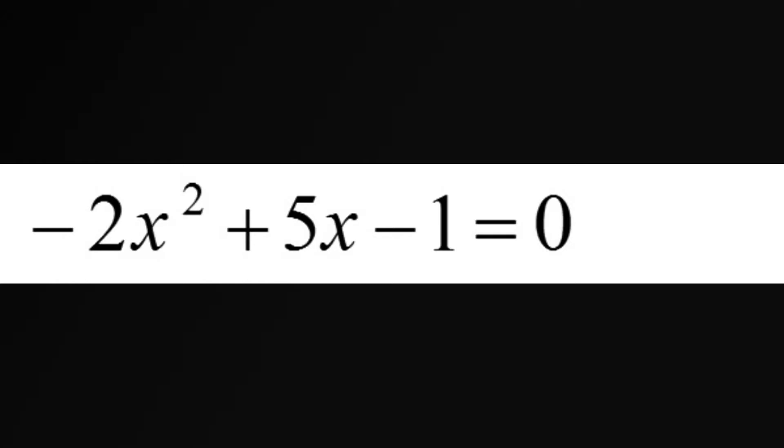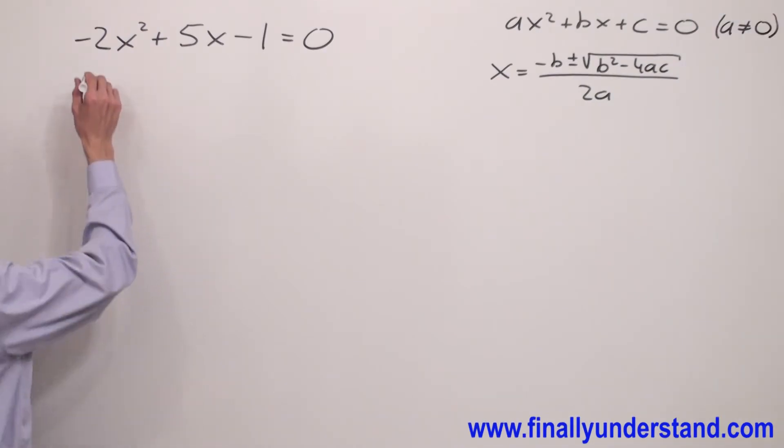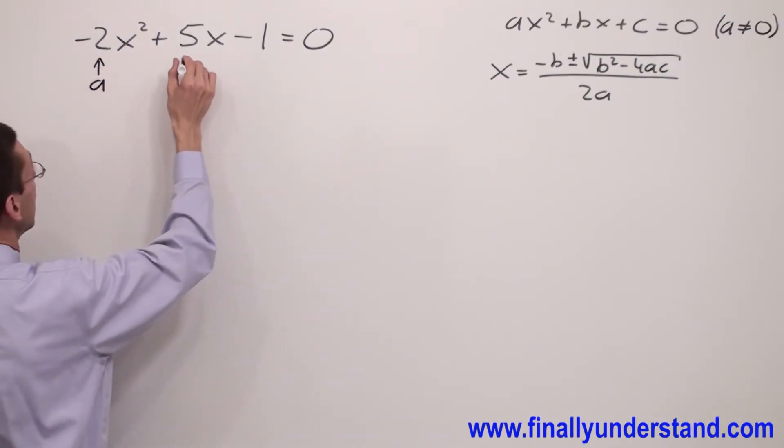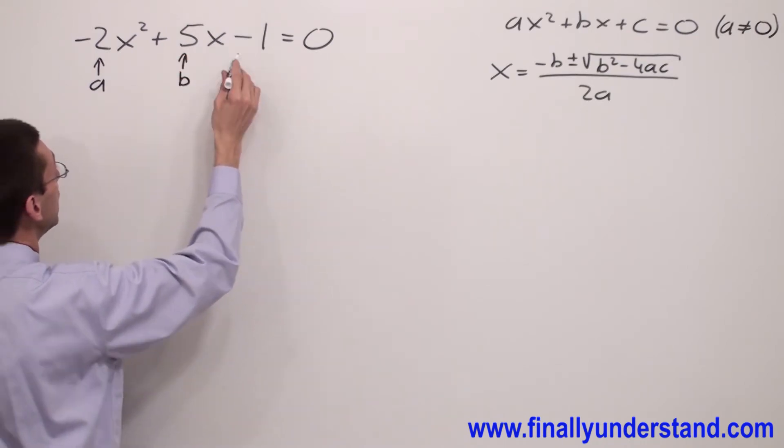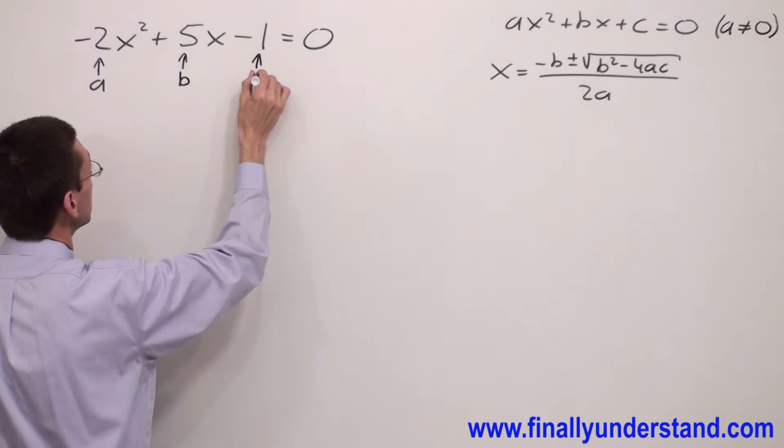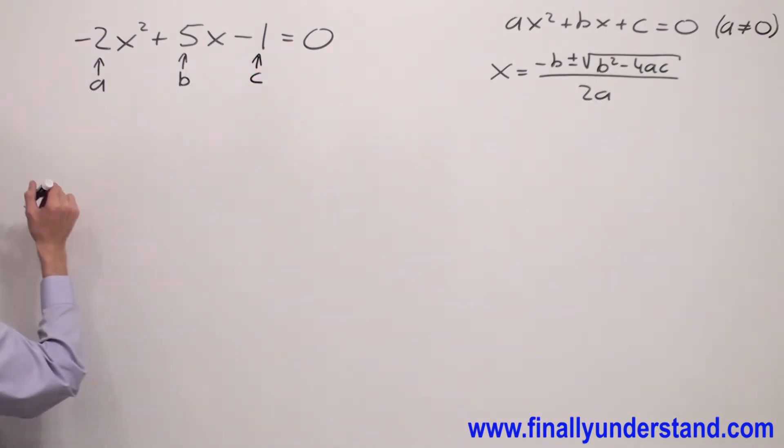We have another quadratic equation on the board. First we're supposed to find a, b, c. Okay, so negative 2 is my a, and we have positive 5 is my b, and negative 1 is my c. Always write the quadratic formula first.